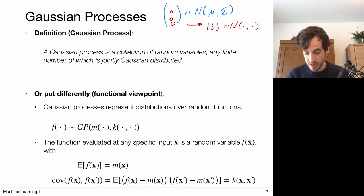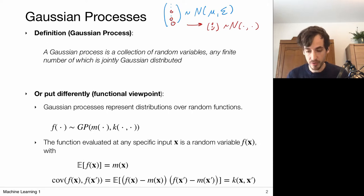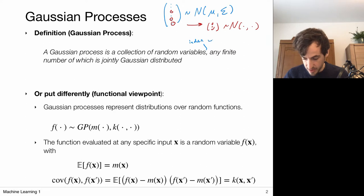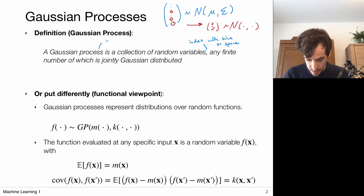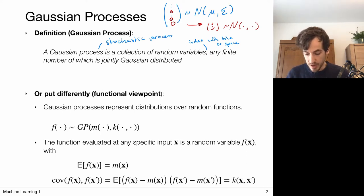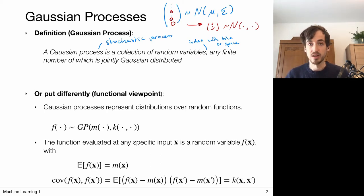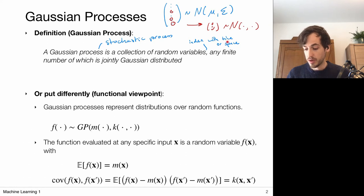A feature of Gaussian processes is that we can handle a collection of random variables of infinite size. These random variables are indexed with time or space, because a Gaussian process is a stochastic process. We can have an infinite number of random variables, each indexed with a particular point in time, in space, or on some continuous manifold.